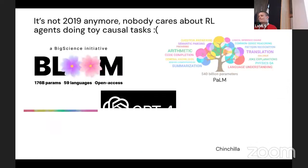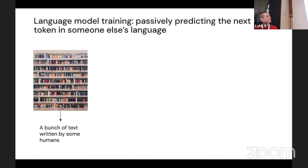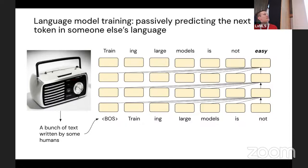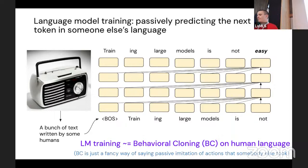But it's not 2019 anymore — everybody's excited about language models. Language model training is different because language models do not take actions in the world during training. All they do is passively predict the next token in someone else's language. You take a corpus of text, pass it through a transformer in tokenized form, the transformer attends to earlier tokens and predicts the next token. You can think of this training as basically being imitation learning or behavioral cloning on human language — you're imitating someone else's language actions without doing those interventions yourself.